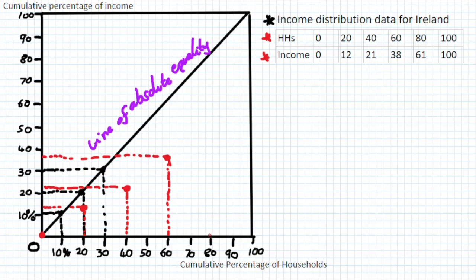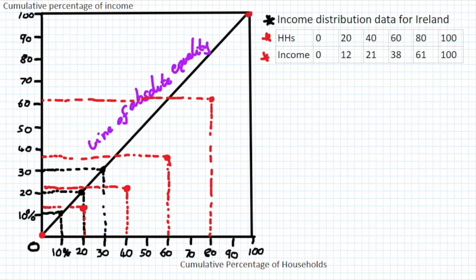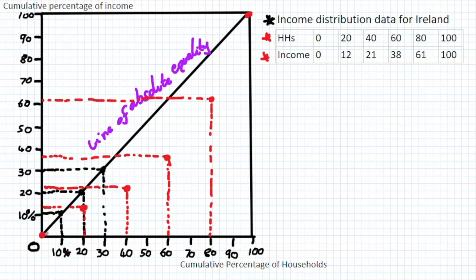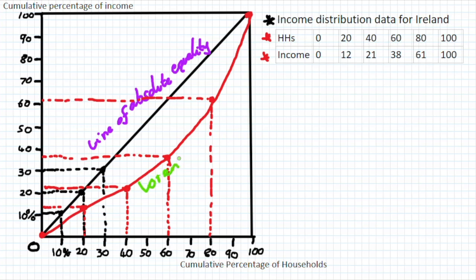At 80% of households, 61% of income is held, so we plot that point at 61%. For our final point, 100% of the population must hold 100% of the wealth by definition, giving us the end point at the top of the box. We then join up all our dots to draw the Lorenz curve for Ireland — starting at the bottom-left corner and curving up to the end point.